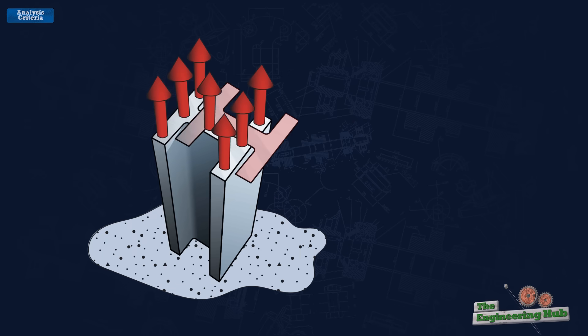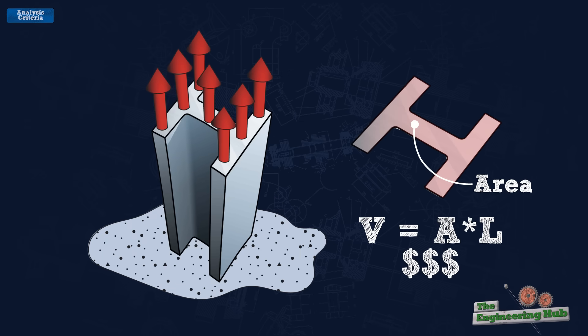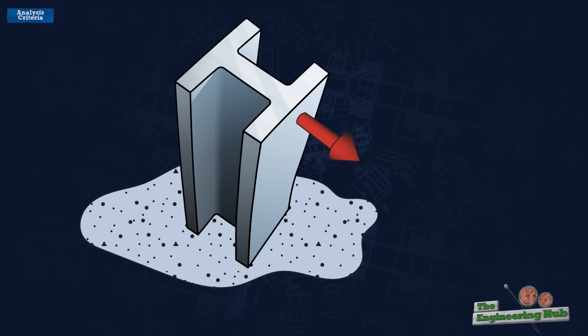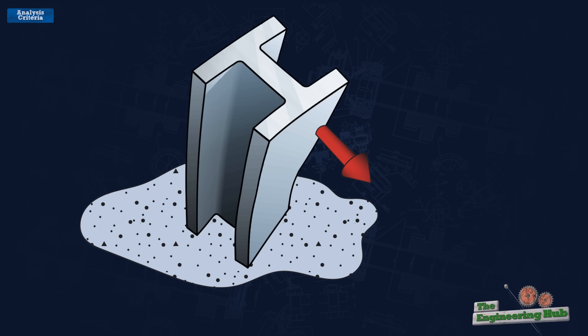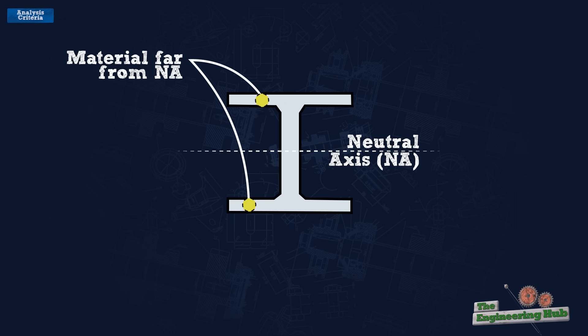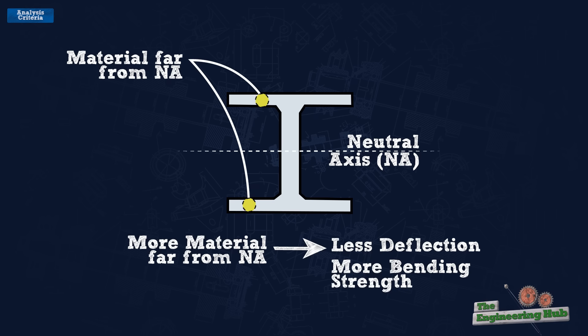Area is important because more area is more material, which results in more weight and cost. Bending resistance is important for beam sections particularly, since this often governs their design. Area moment and section modulus are used to quantify bending resistance. Area moment is higher when more material is further from the neutral axis, and more area moment means less deflection. Section modulus is derived from area moment and determines bending strength. Having more material further from the center increases both of these parameters.